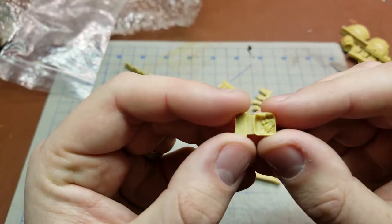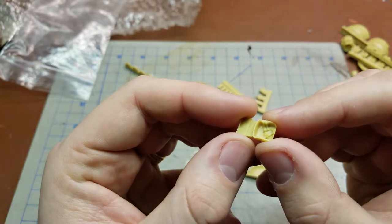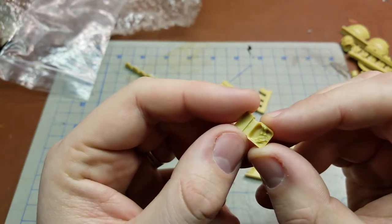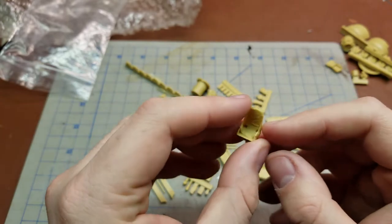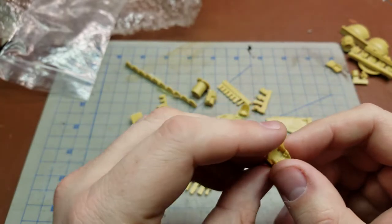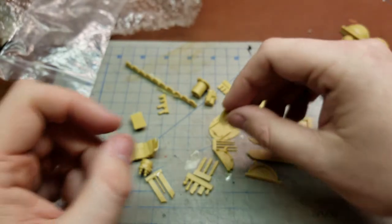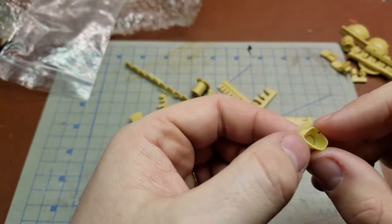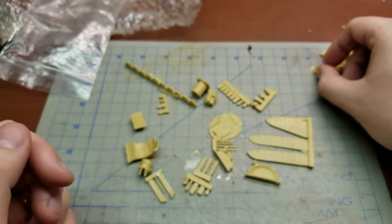We have the pilot seat, or the rear gunner seat in this case, with molded-in seatbelts. Here would be the pilot seat, again, molded-in seatbelts.